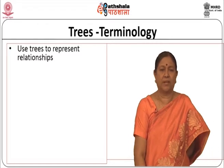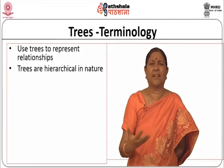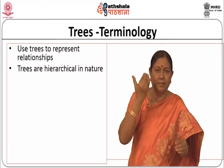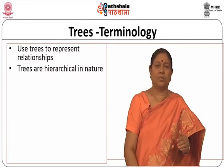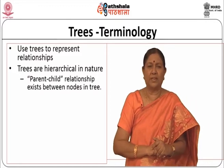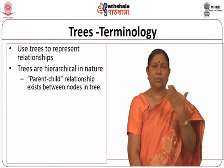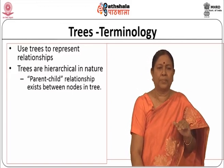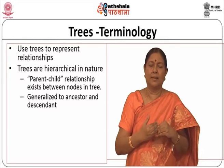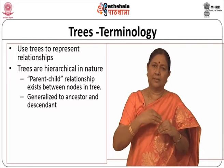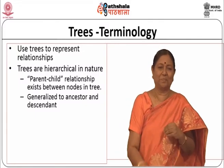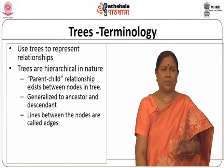Trees are used to represent relationships. Trees are hierarchical in nature - you have a first level, under that some nodes, under that some nodes. Parent-child relationship is often described between the nodes in the tree. The root is a parent of an internal node, and this generalizes to ancestor and descendant. If you say ancestor, it means grandparent and great-grandparent. Descendant is child, grandchild, and so on.